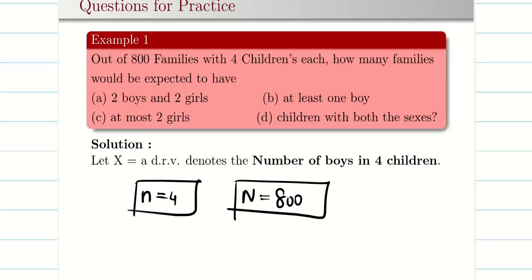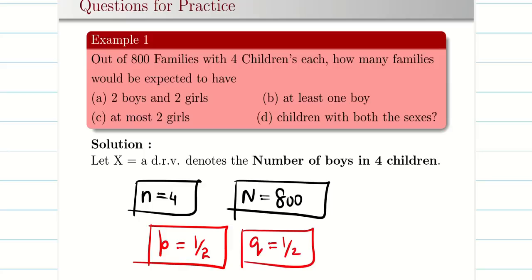So small n and capital N are identified. Now p — the probability of success. Whether you take boy as success or girl as success, it is always 1/2 (50-50). So p = 1/2 and q = 1/2.